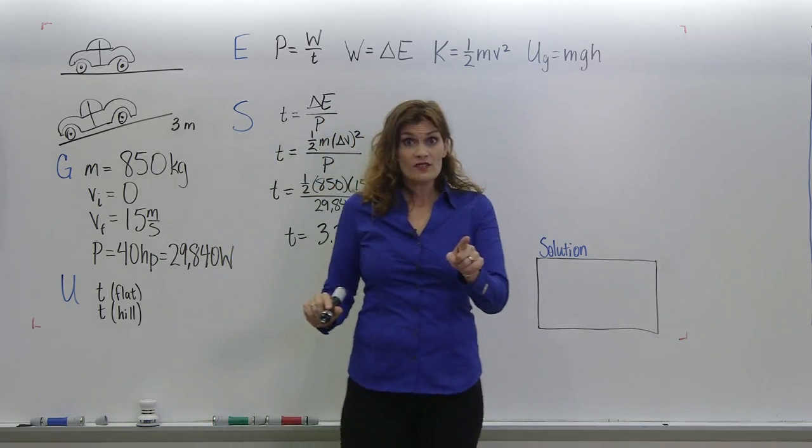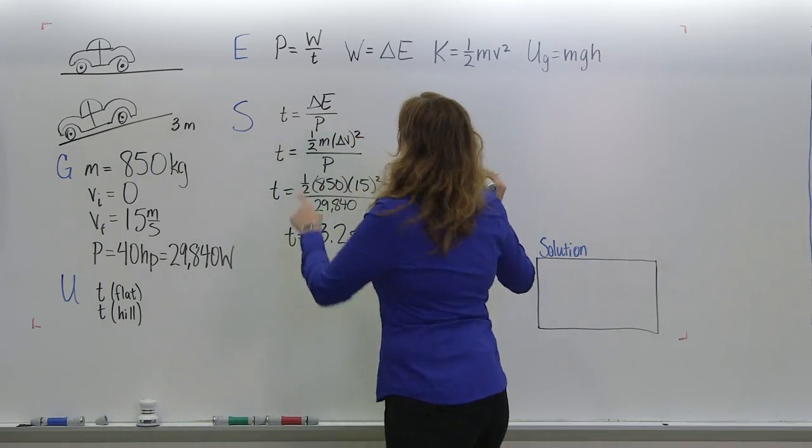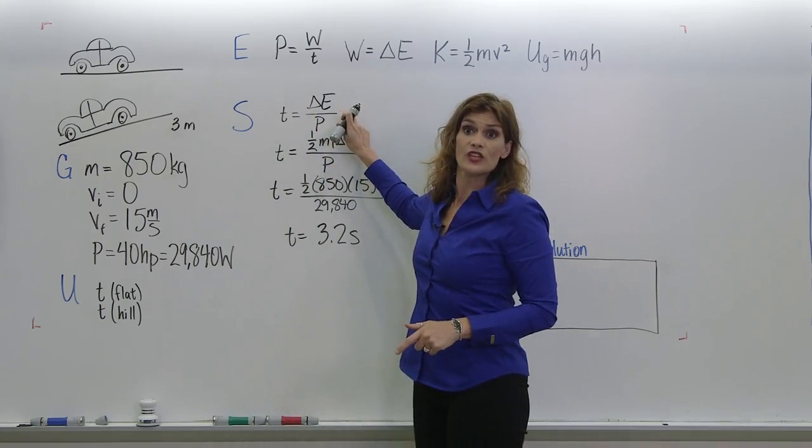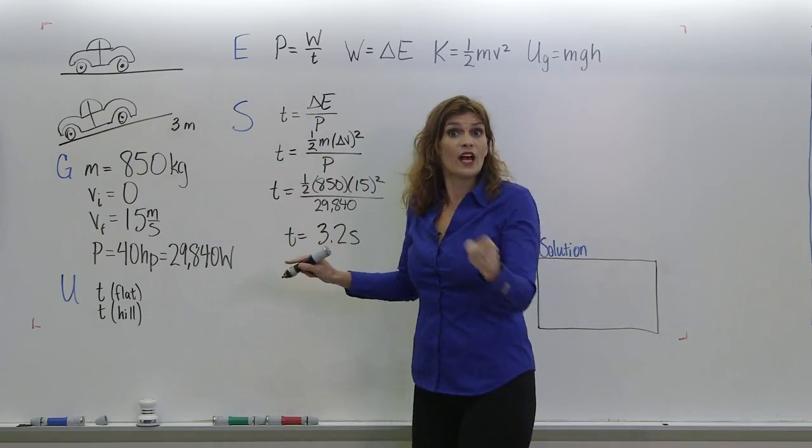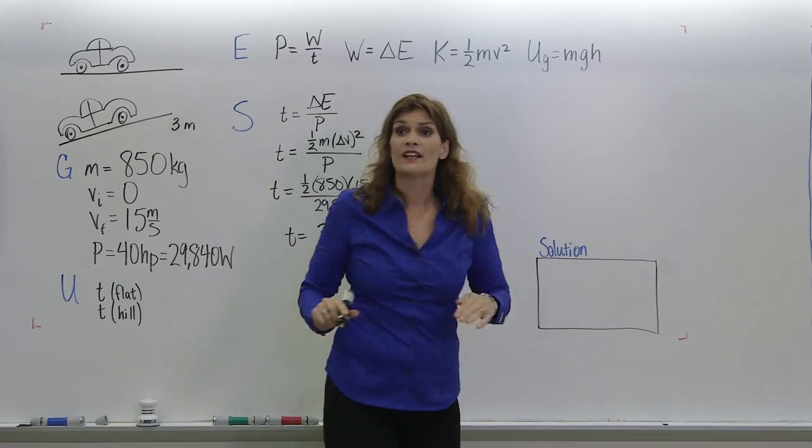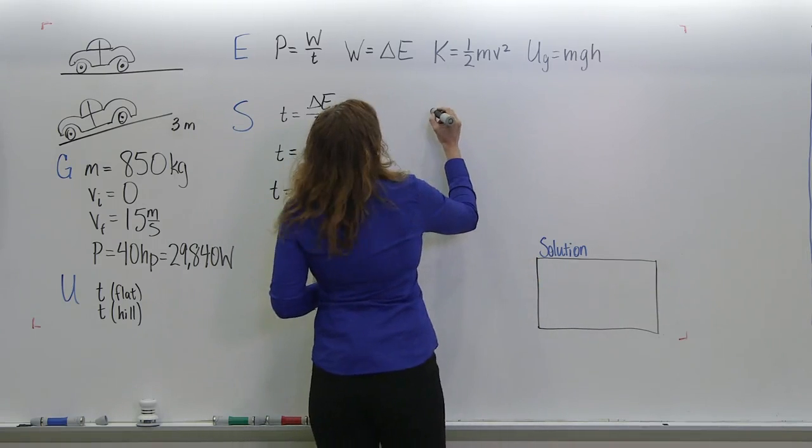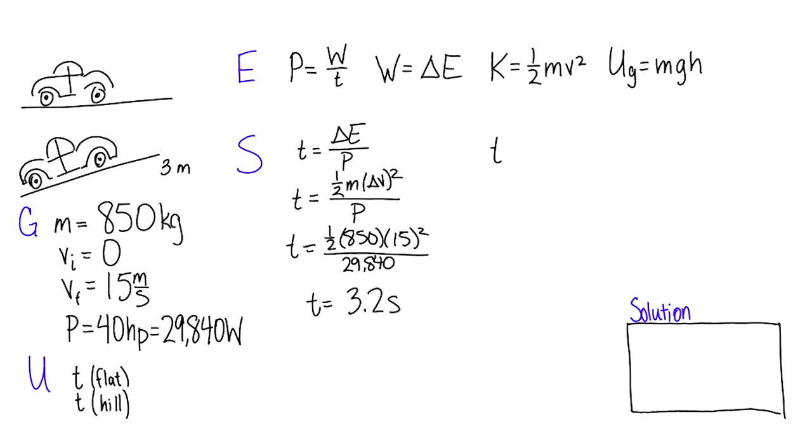So what changes if you're going up a hill? We know that this is the total change in energy. So if you're going up a hill, you're actually going to have to increase this by adding the change in gravitational potential energy. So it looks kind of like this: same thing except for this now looks like the same plus you have to add another component.